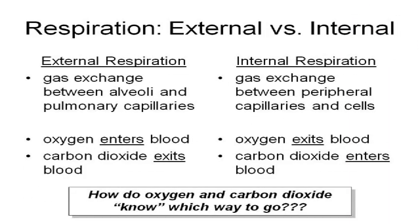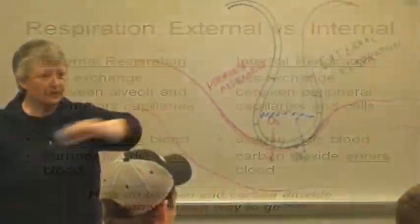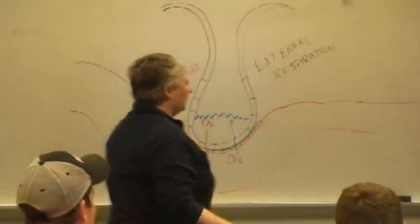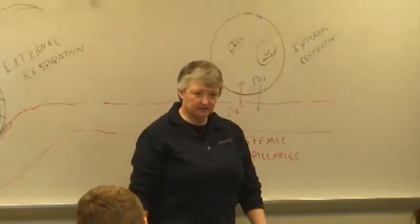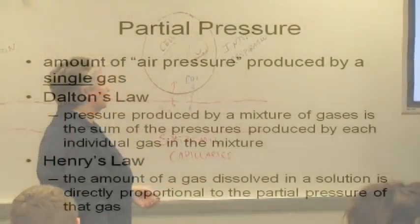Now since carbon dioxide and oxygen are moving in opposite directions depending on where they are in the circulatory system, how do they know which way to go? I mean there's no little ranger going in here, going out here, going in there, going out here. And this goes back to your question - it depends on the relative amounts of the gases between the two areas, what we call the partial pressure.